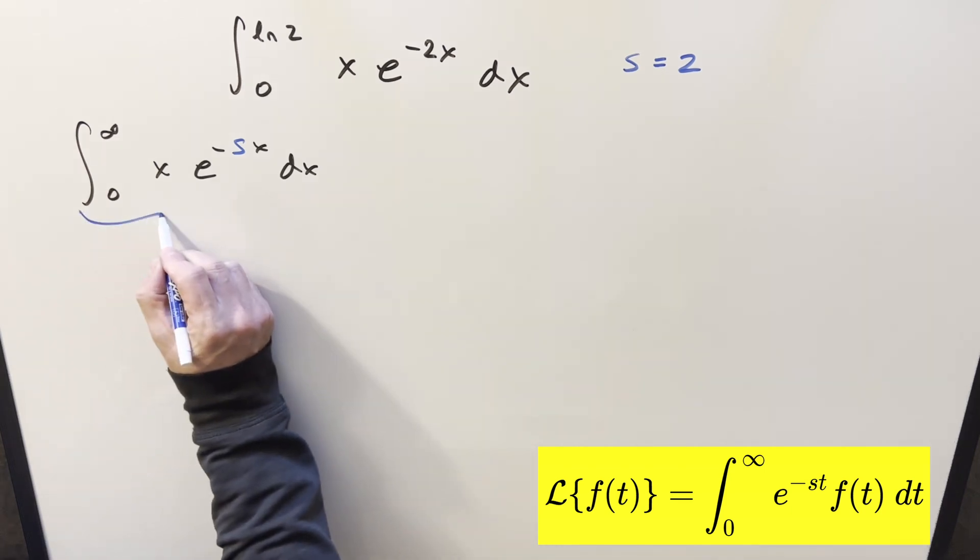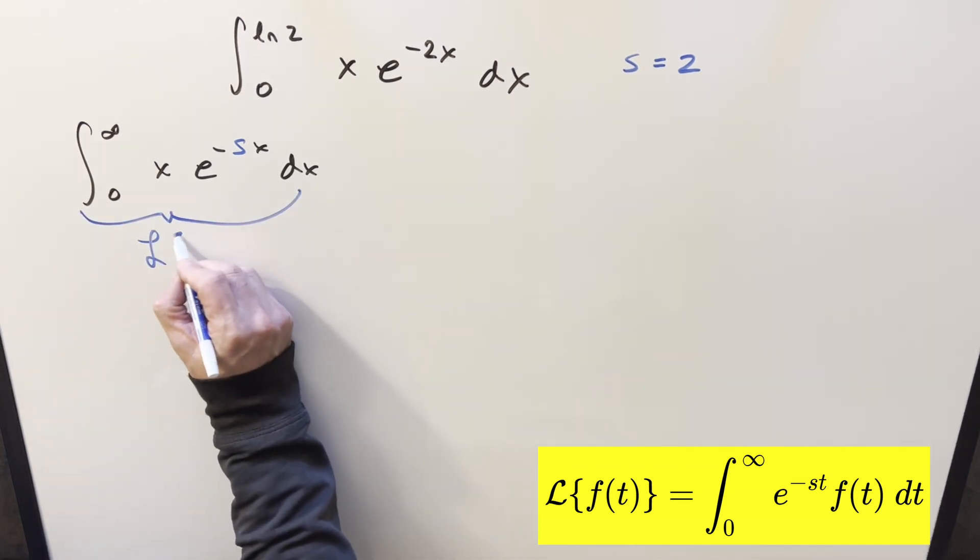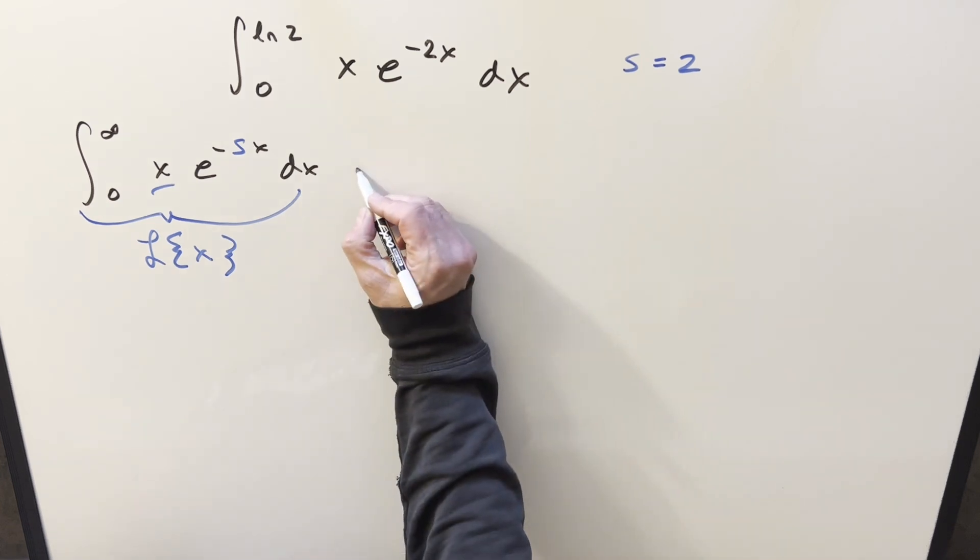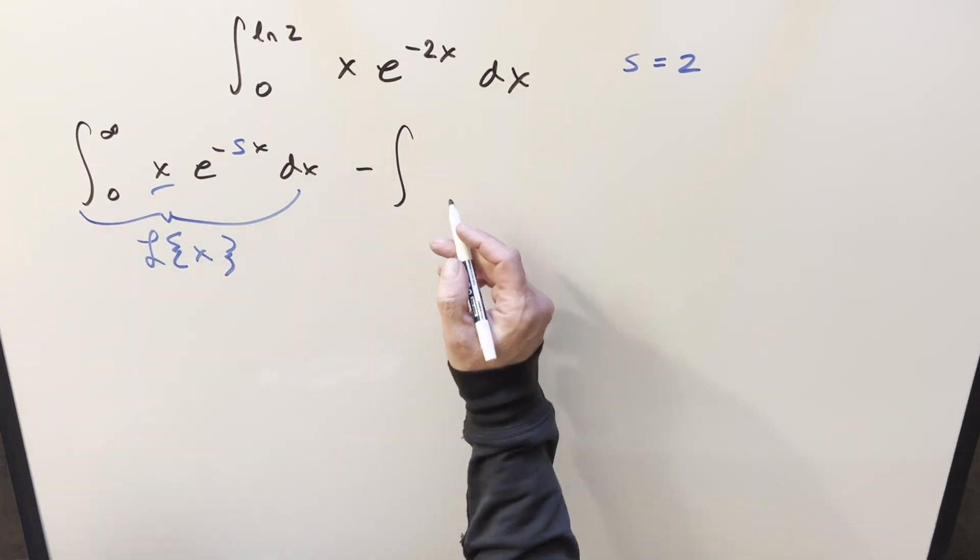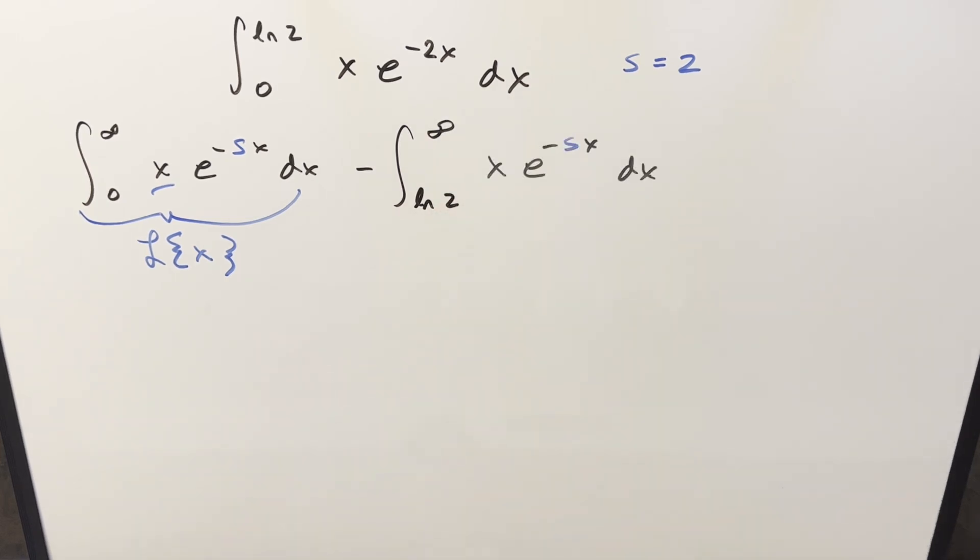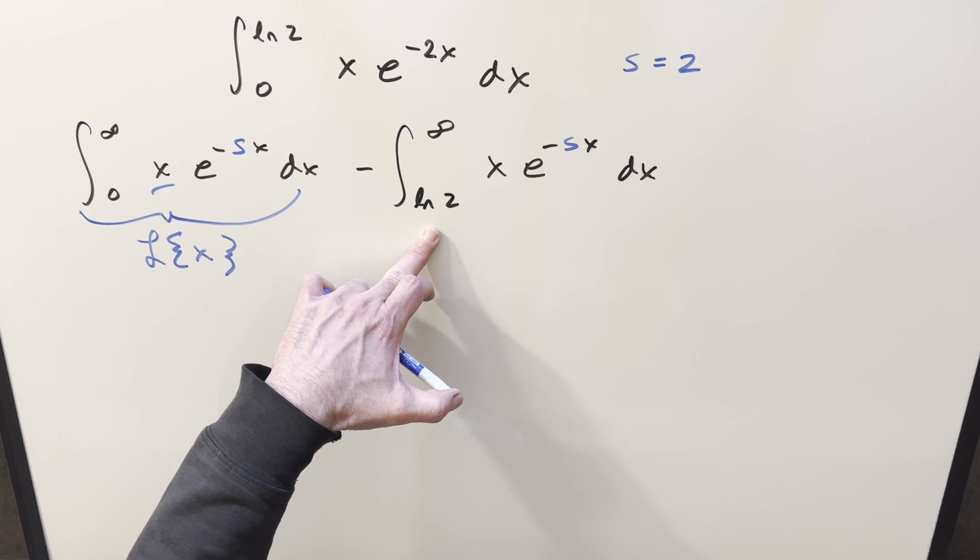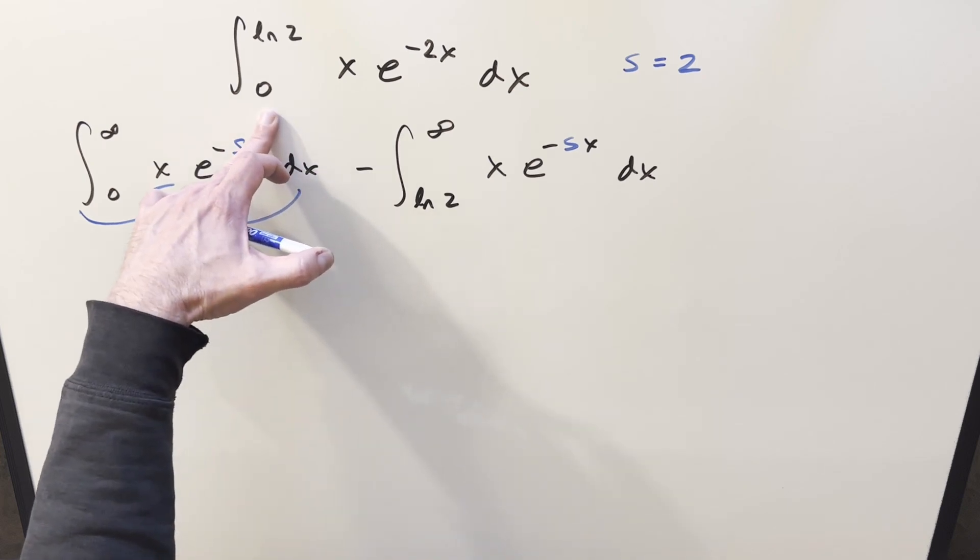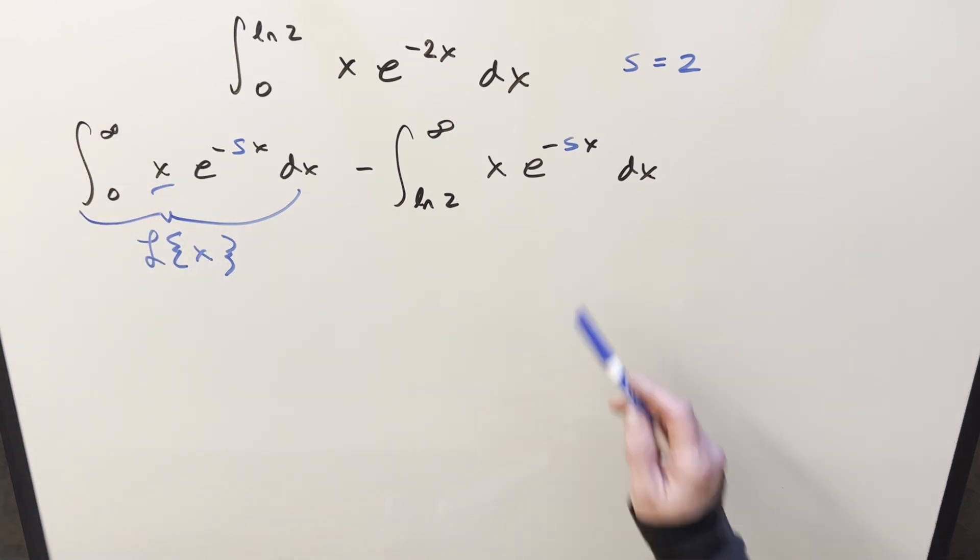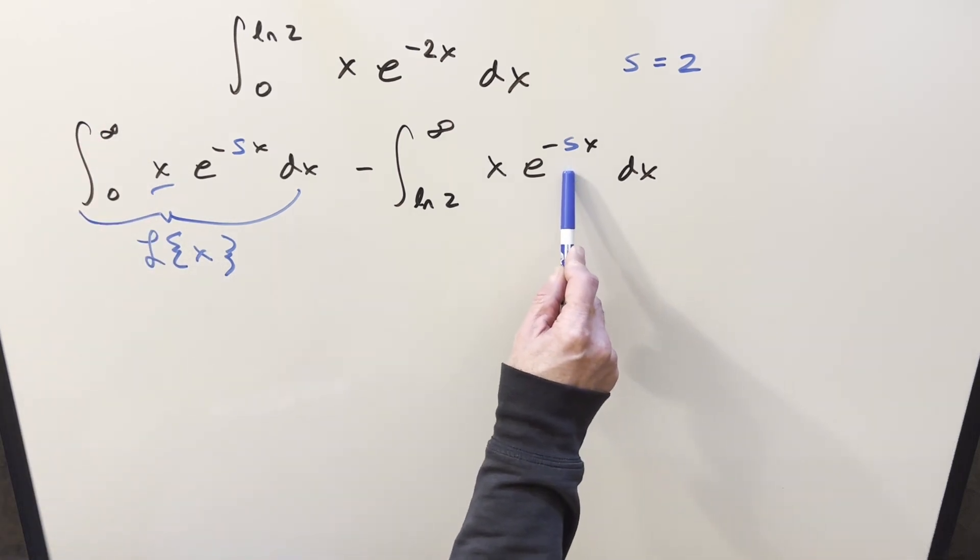So then this integral here is something we know how to do, because this is actually just the Laplace transform of this input x. But now, of course, what we have here is not our original integral. We changed the bounds. Well, all I need to do to make this work is I can subtract off the remaining area. So I can subtract off this integral from natural log 2 to infinity. Just by the property of the definite integral, you can always break things up this way. If you think about it as these two integrals being equal to this, if you just add this one on both sides of the equation, you get the integral from 0 to ln 2.